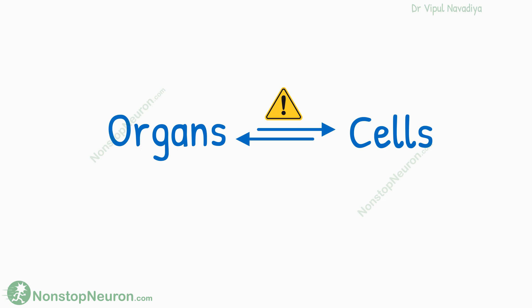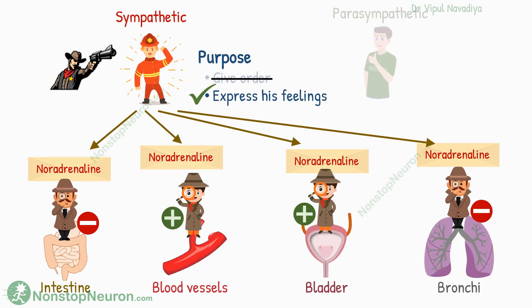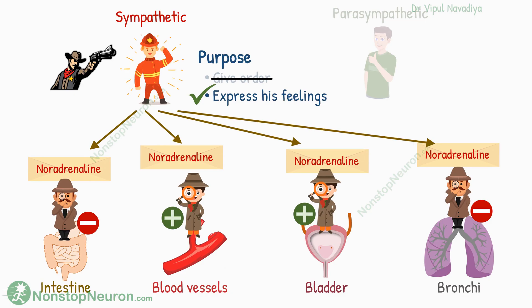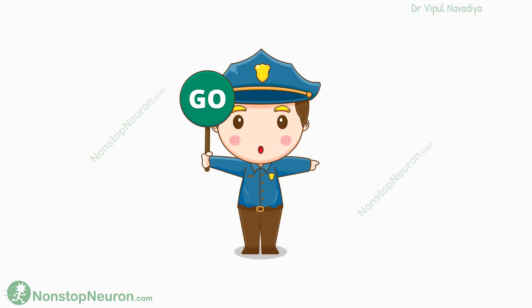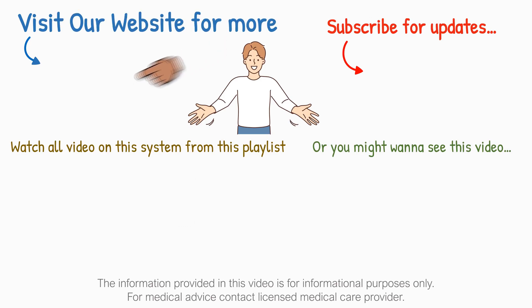One last thing: I have used the term organs interchangeably with cells to keep our discussion simple. But in reality, organs do not send or receive information as a whole. Different cells in organs send and receive different signals as per their functions, so keep that in mind. To summarize everything: the purpose of sending a message is not to give orders to the target cell — it's to express the feelings of the sender. At that point, the job of the sender is done. Further clarity regarding what should be done is added by receptors. That's it for this video. Thanks for watching. See you in the next video.